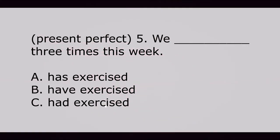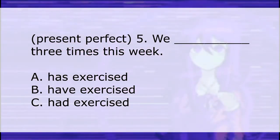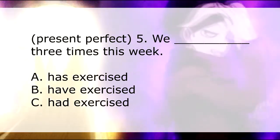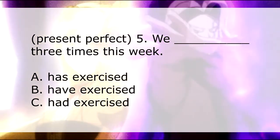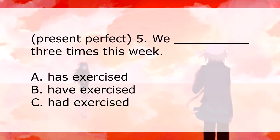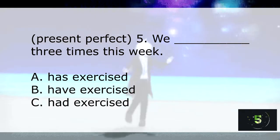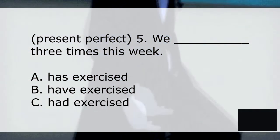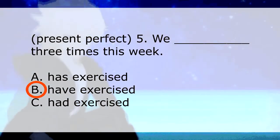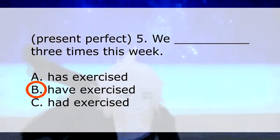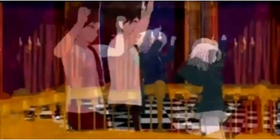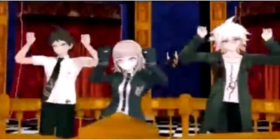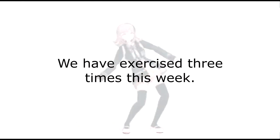Question 5: 'We ___ three times this week.' Which of the following is the appropriate present perfect tense to use to complete the sentence? A) has exercised, B) have exercised, C) had exercised. The correct answer is B, 'have exercised.' We have exercised three times this week. Good job!